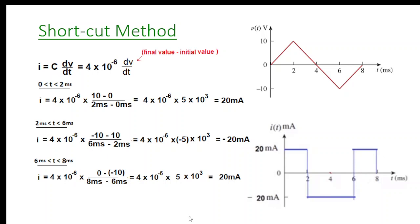We can now directly plot these three interval values: 20 milliamps, -20 milliamps, and +20 milliamps. I hope you've been able to follow this — whichever method you like, let me know through your comments. Thank you.